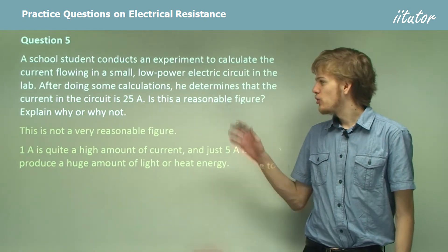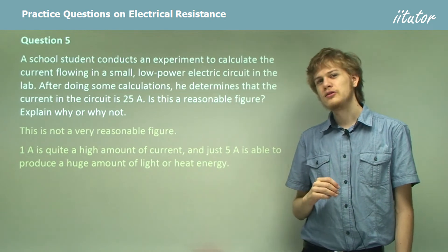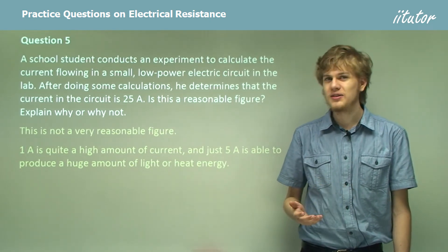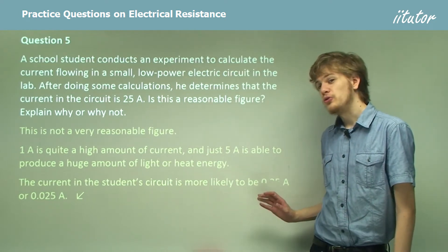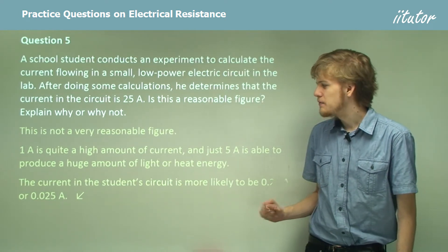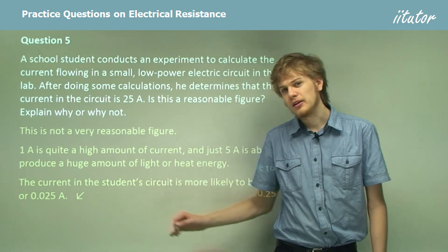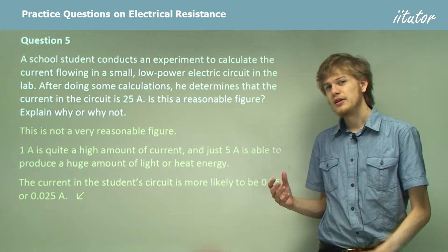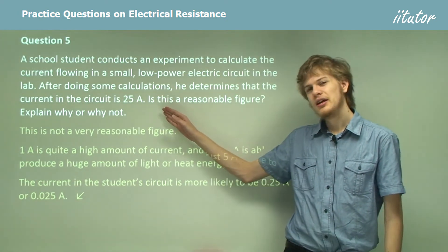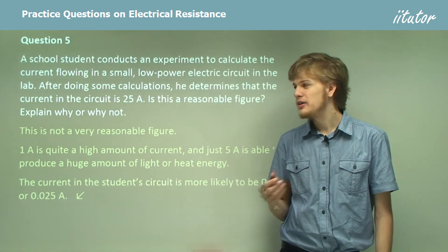So if we were to measure a low power circuit and get 25 amps, then there's probably something wrong with our measurement or our calculations. The current in the student circuit is more likely to be perhaps 0.25 amps or maybe even 25 milliamps. This might be likely because it's possible to calibrate the ammeter so that instead of measuring in amps, it might be measuring in milliamps. And that would explain why he's off by so much.